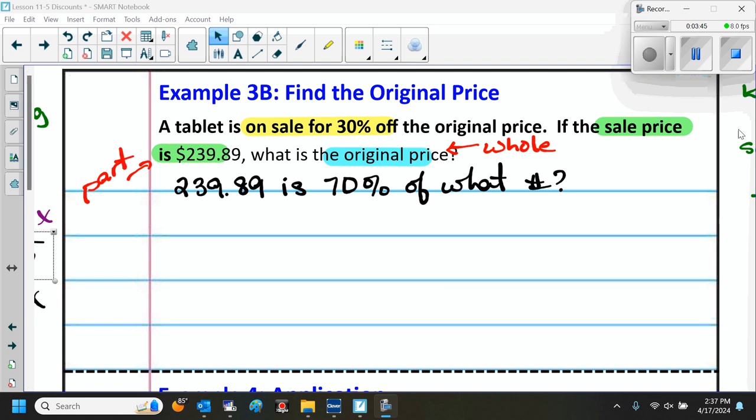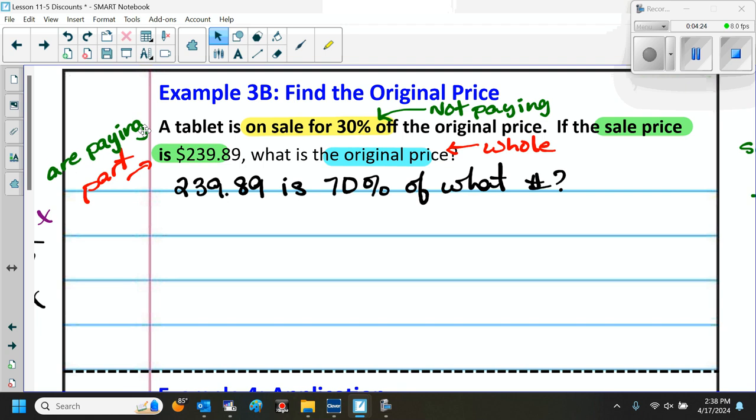That sale price is the part and the whole is the original. So we've got $239.89 is 70% of what number. Why did we get 70%? Because the 30%, this is how much is off the original price. So that 30% is how much we are not paying. But this amount over here, this part, that is how much we are paying.